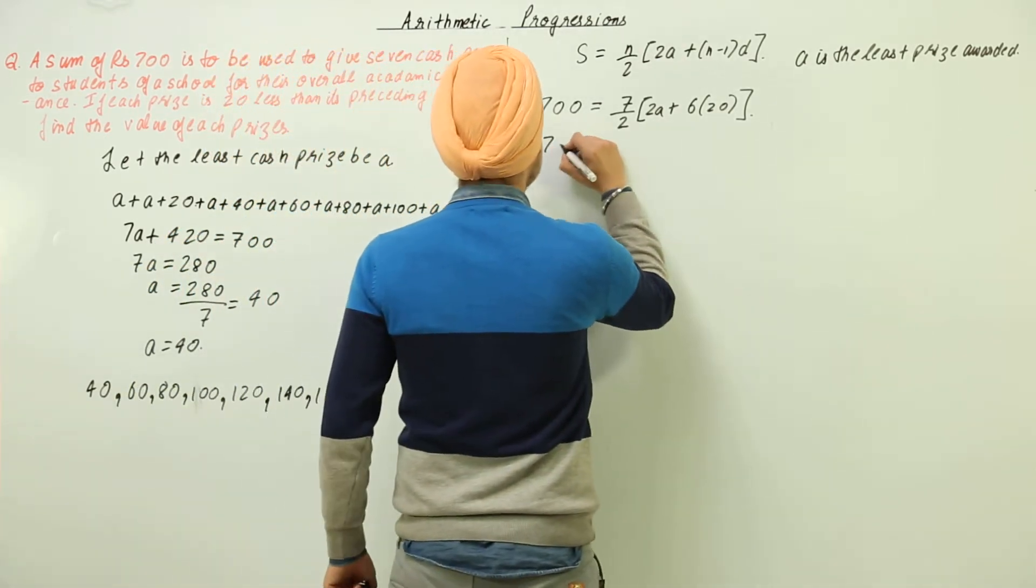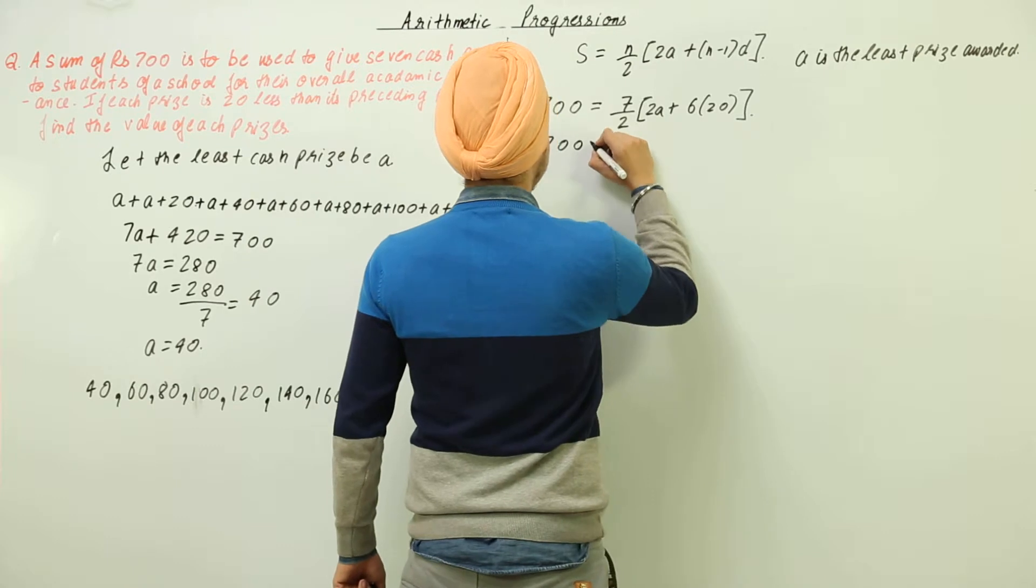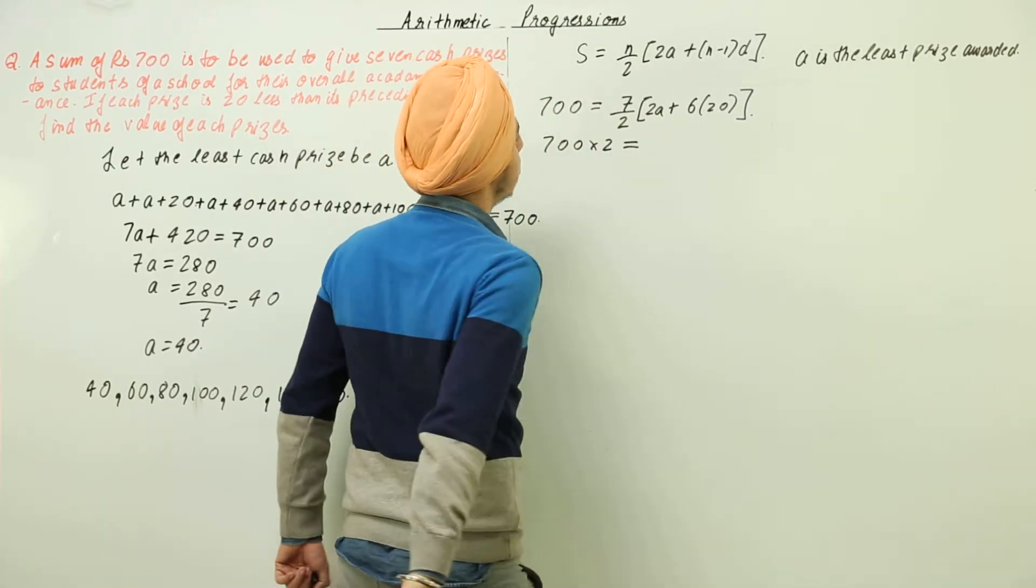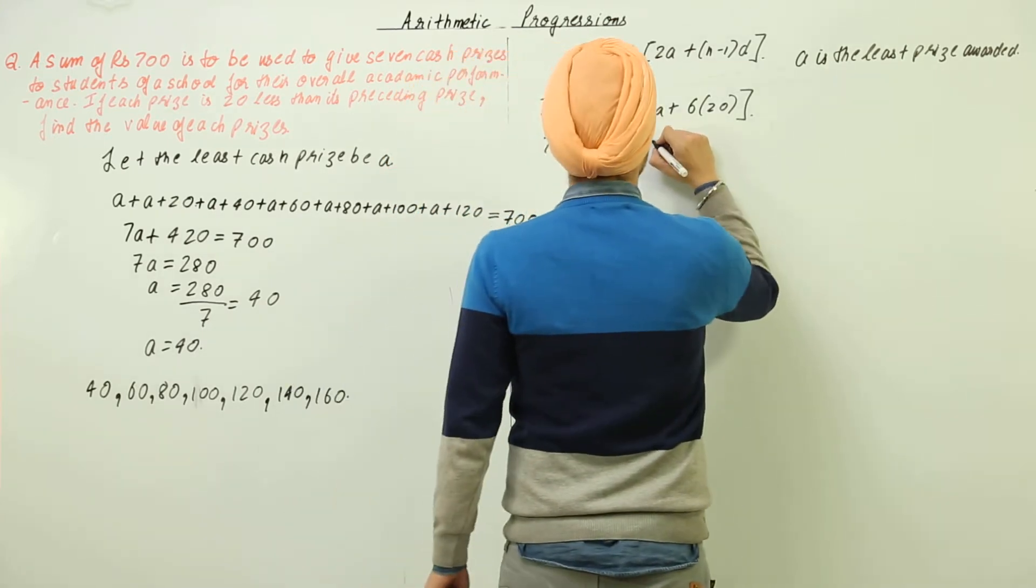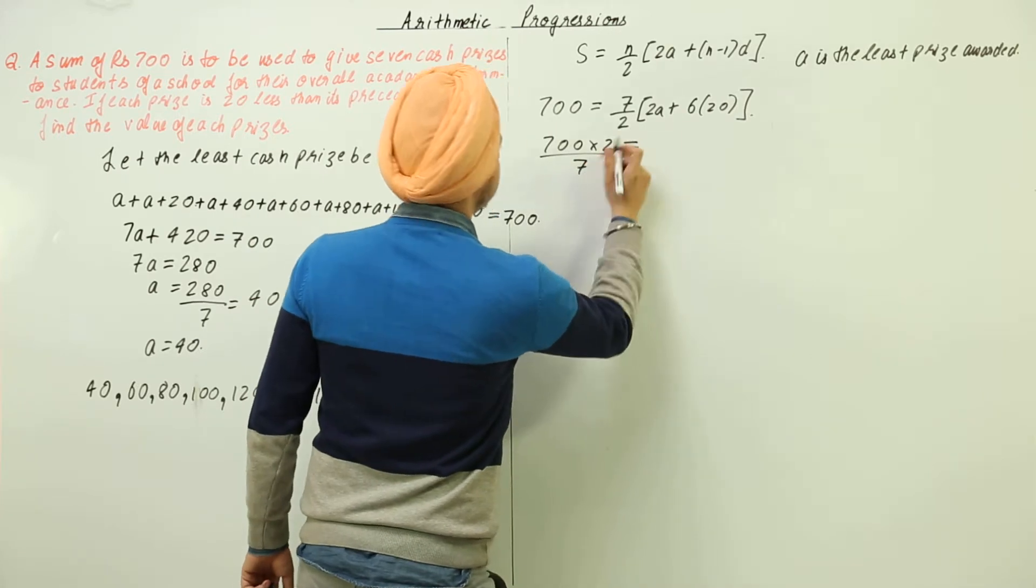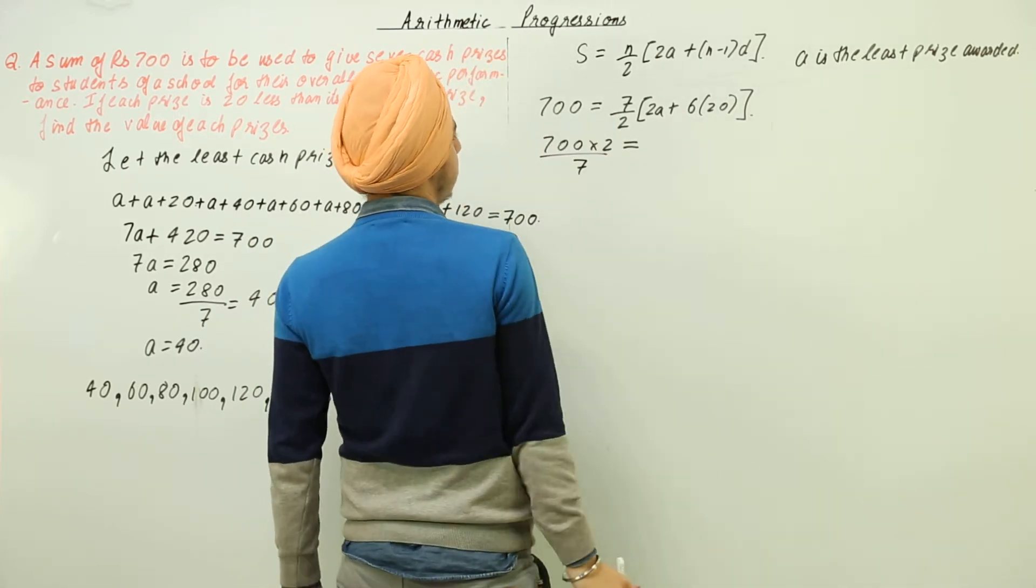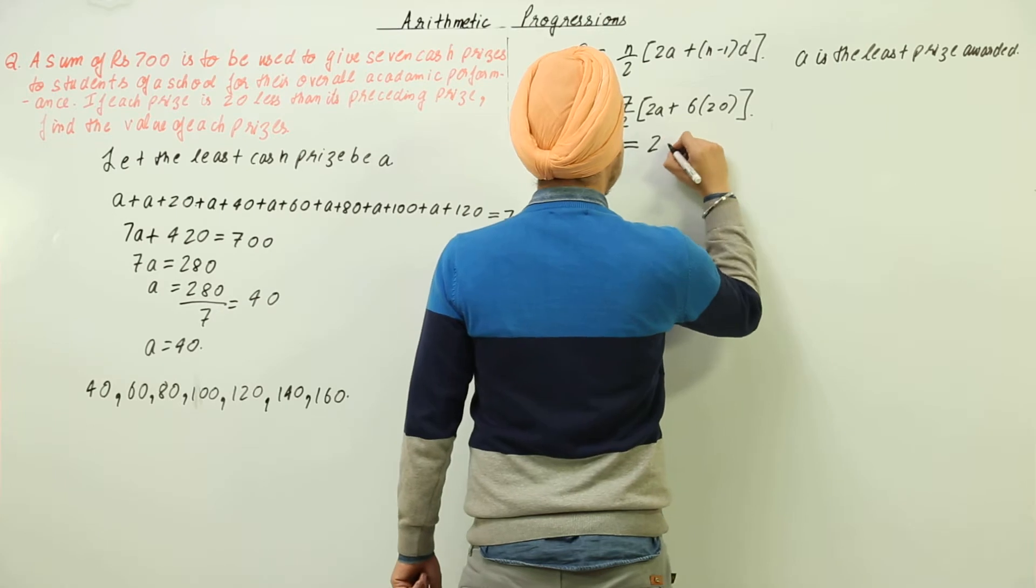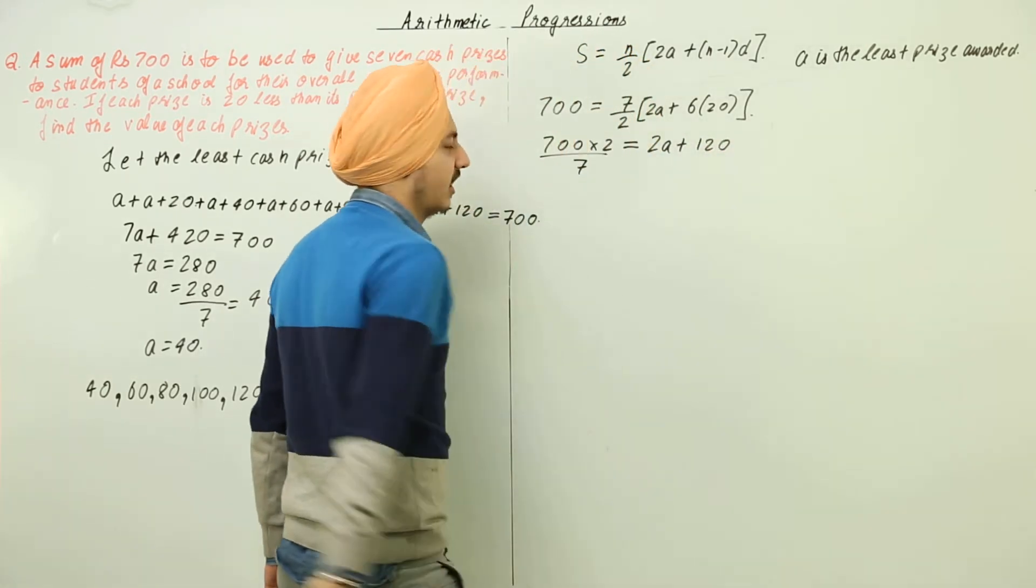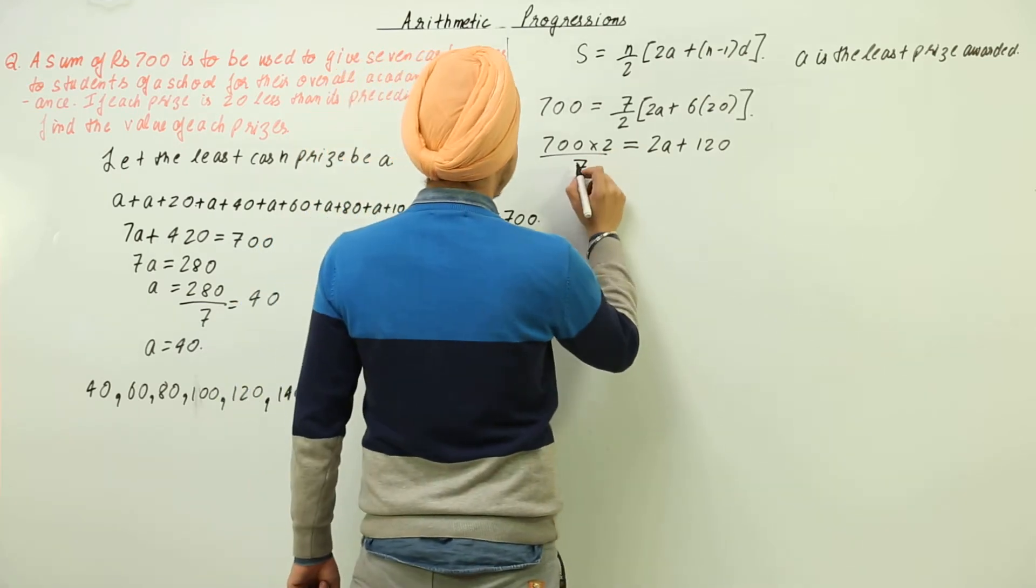This 700 into 2, I have taken this 2 over here. I can also divide this by 7. I have divided this by 7 and multiplied this by 2. So next what remains in this is 2a plus 120 and this over here becomes 200.